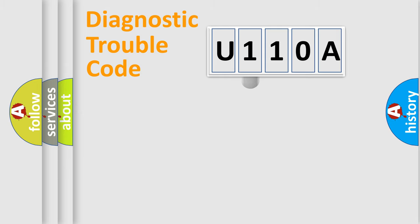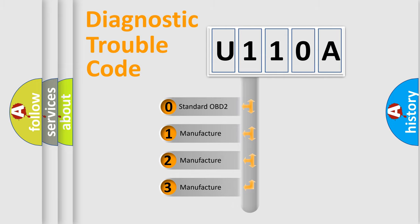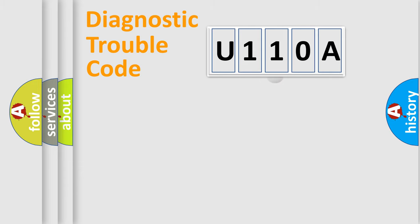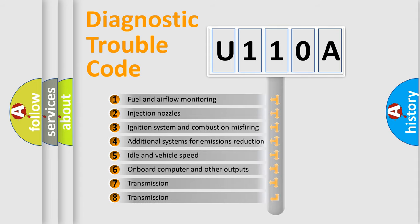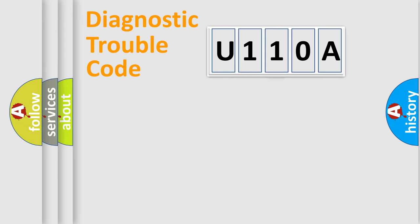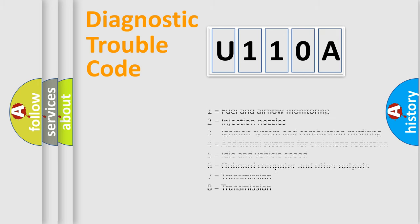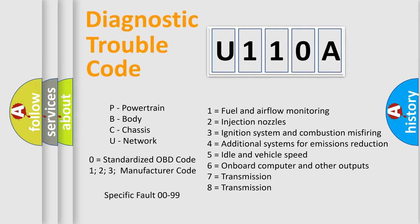This distribution is defined in the first character of the code. If the second character is expressed as zero, it is a standardized error. In the case of numbers 1, 2, or 3, it is a more specific manufacturer-defined error. The third character specifies a subset of errors. The distribution shown is valid only for the standardized DTC code, and only the last two characters define the specific fault of the group. This division is valid only if the second character code is expressed by zero.